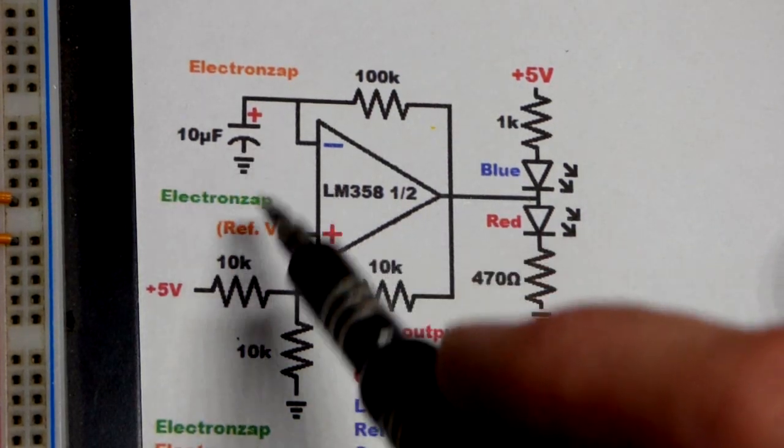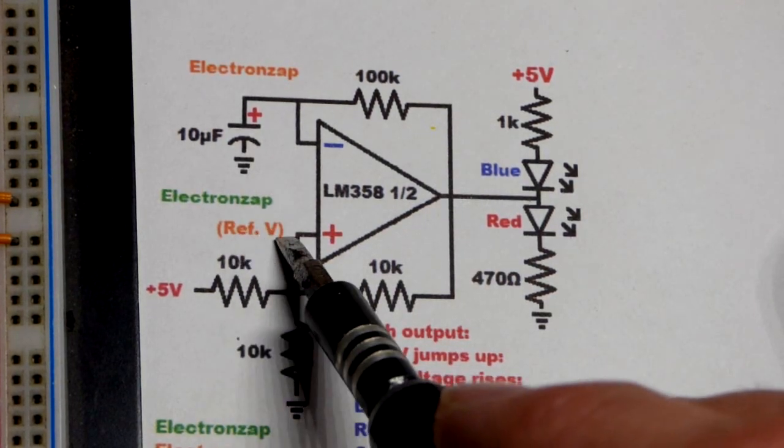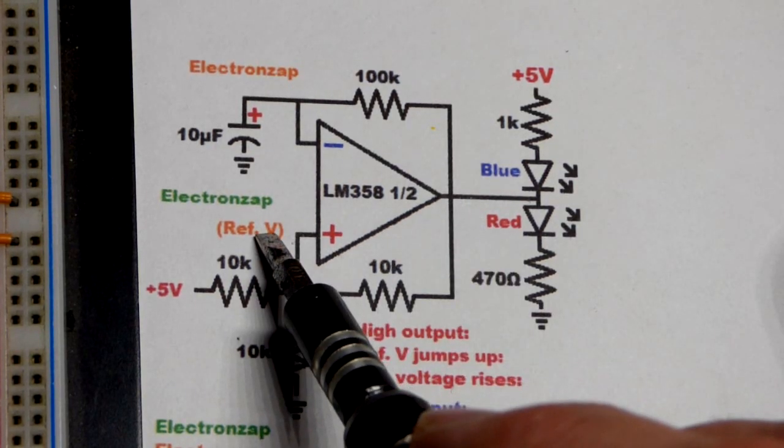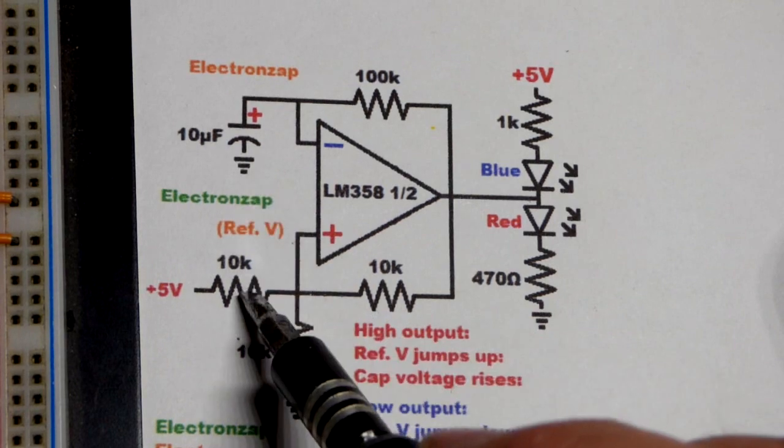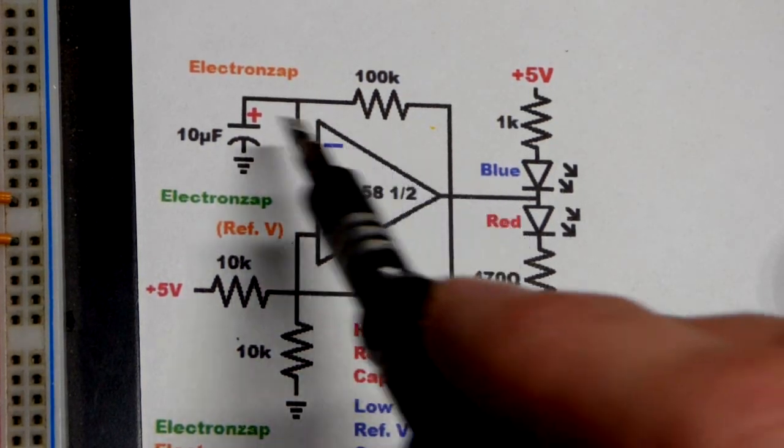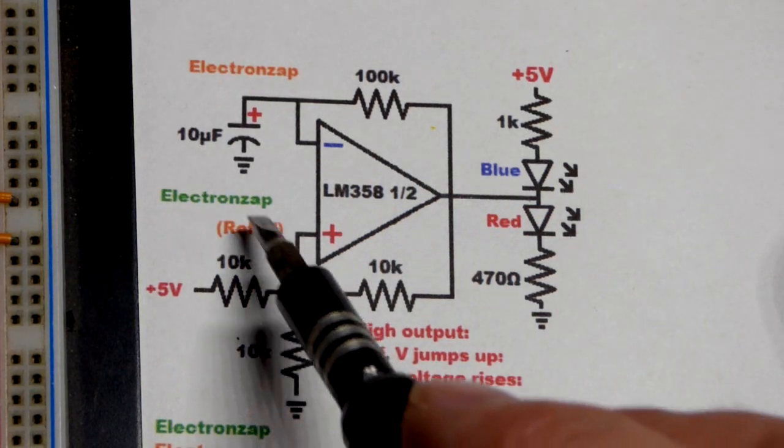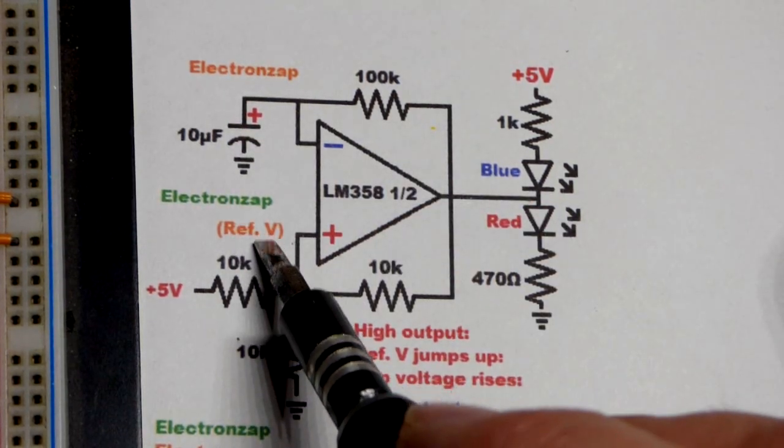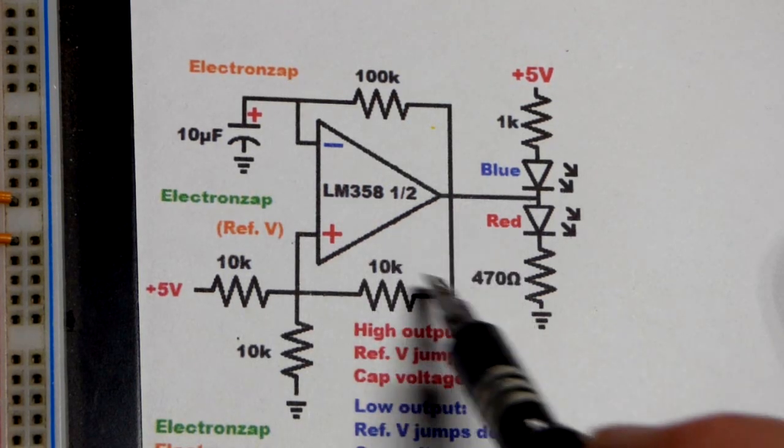Current starts going to ground until the voltage drops lower than the reference voltage. The output is always more like the reference voltage. When the capacitor drops lower, that means the reference voltage is higher so the output goes high. That raises the capacitor. Once the capacitor gets higher, that means the reference voltage is lower and thus the output goes low, connects to ground.